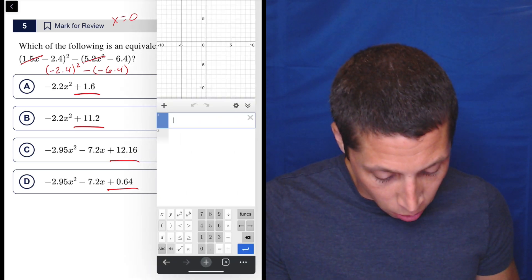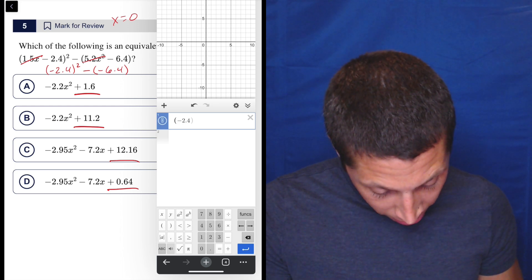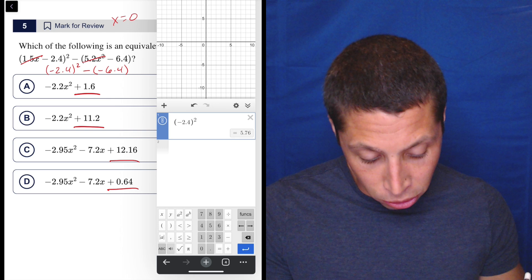So we have negative, what is it, 2.4, 2.4, and let's close those parentheses and then do the squared, okay?